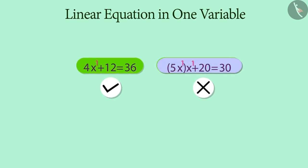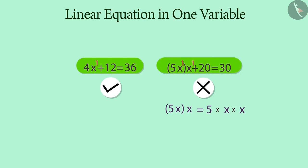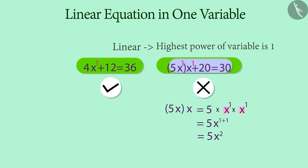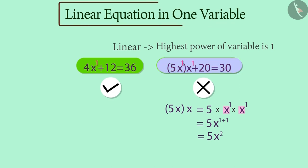An important aspect of this equation is that x is multiplied by 5x. So the term related to x in this equation will be a product of 5x and x. Here we see that two terms with base x are being multiplied, therefore their individual powers will be added, and the last term will be 5x². As you can see, the power of x is two. As per the definition of a linear equation, the second equation cannot be considered a linear equation — therefore it is not a linear equation in one variable.